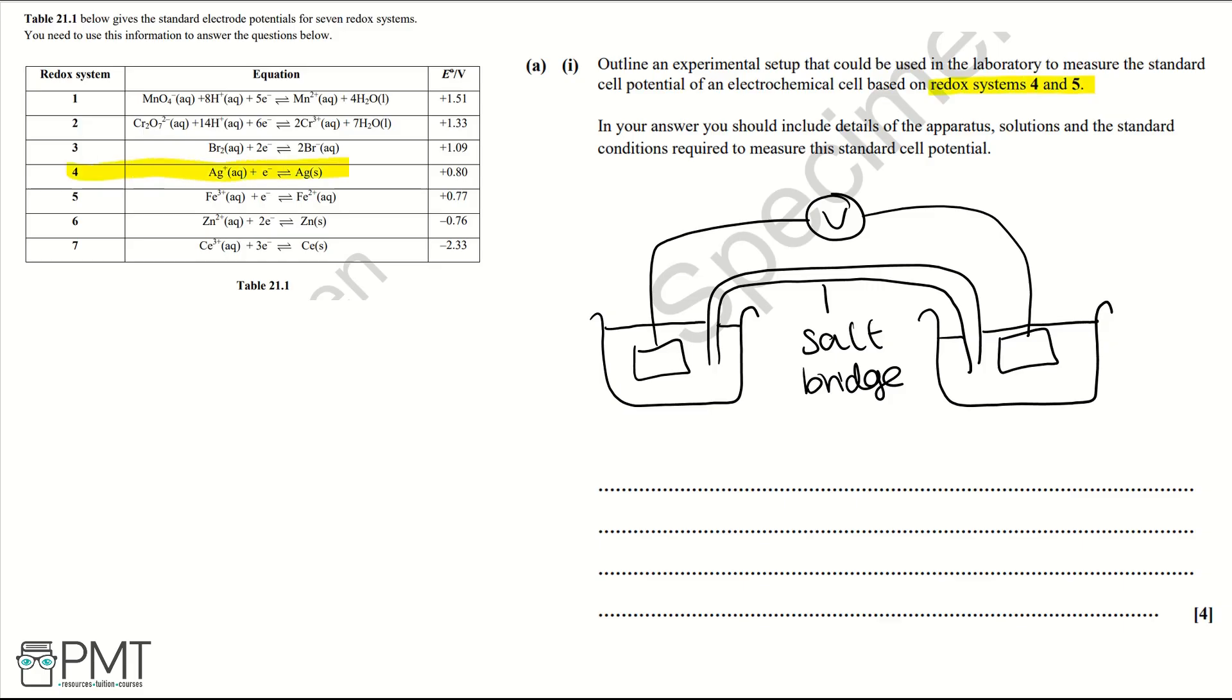Here's redox system 4 and here's redox system 5. In redox system 4 we're using a silver solid, so that's going to be what our electrode is made of. We're going to have silver metal. In redox system 5 we don't have a solid produced or reacting, so our electrode is going to be made of platinum metal.